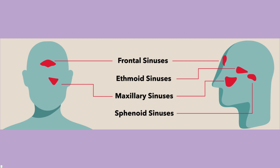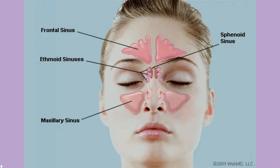Here are the four sinuses: frontal, ethmoidal, maxillary, and sphenoidal sinus. The location for each sinus — according to the picture — frontal sinus is above your eyes, maxillary sinus is under your eyes, ethmoidal sinus is between your eyes, and lastly the sphenoidal sinus is behind your eyes. That's why they're called paranasal sinuses, because they are all located around your nose.